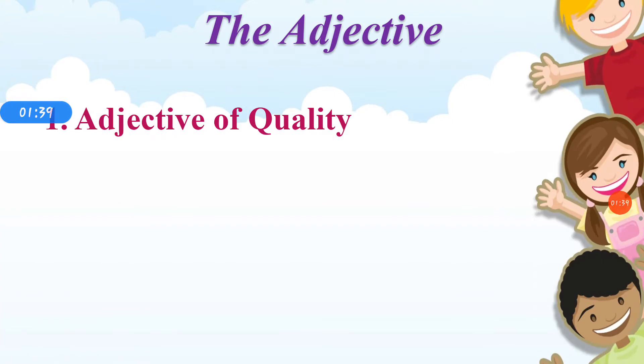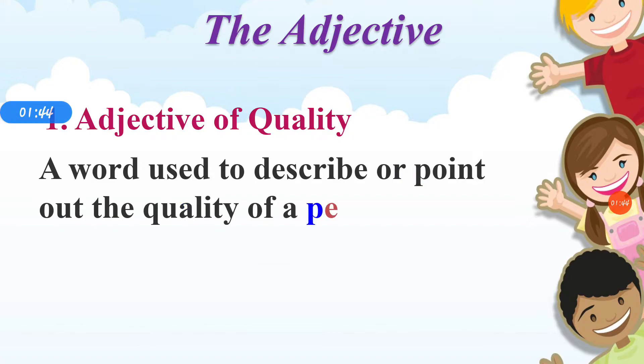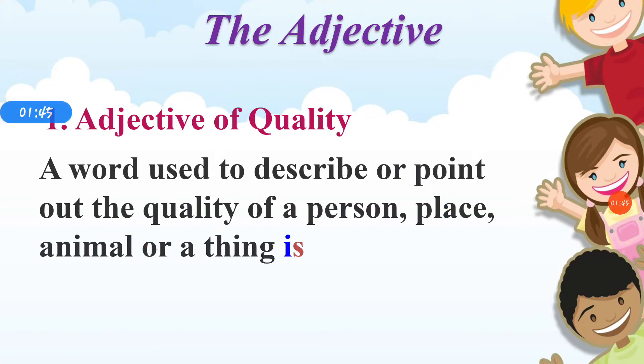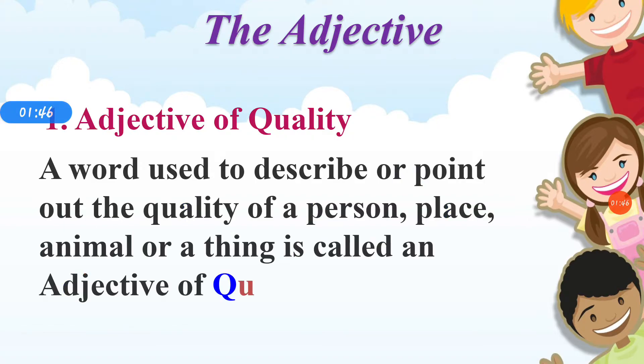What is adjective of quality? A word used to describe or point out the quality of a person, place, animal, or a thing is called an adjective of quality.